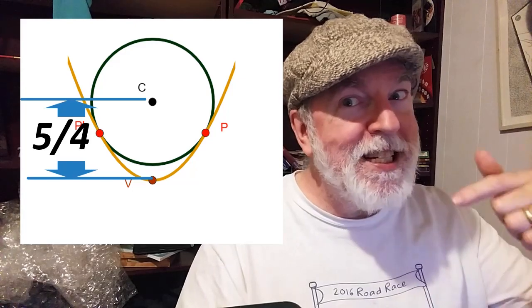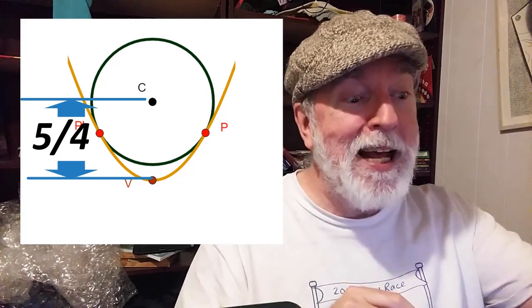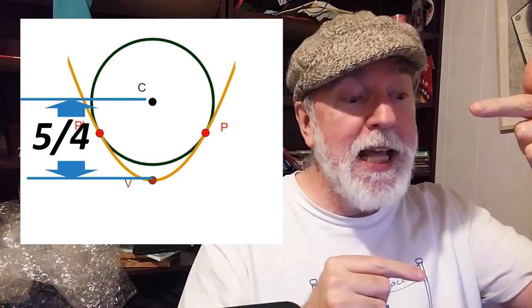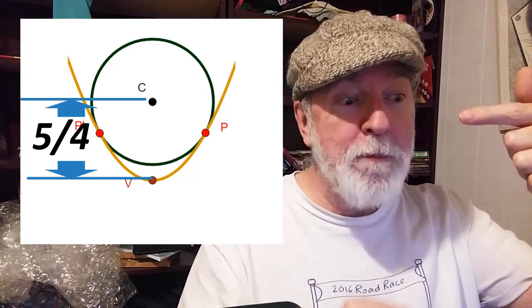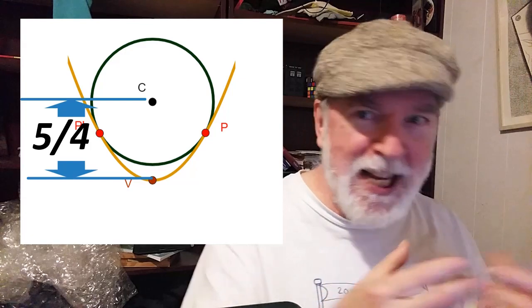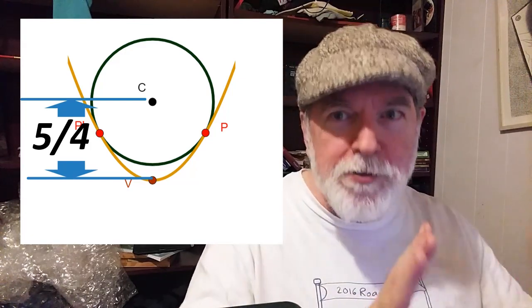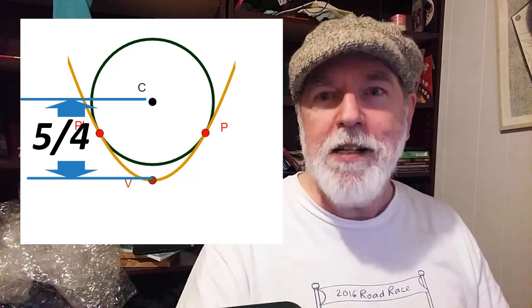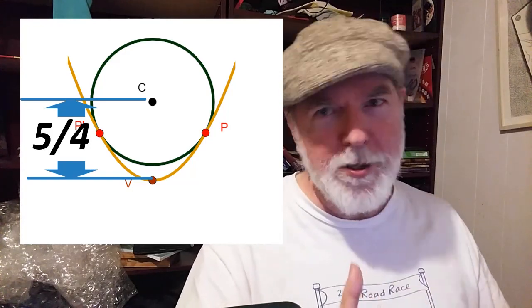Our question was basically how far is C from V. But we've shown that the distance between C, the center of that circle, and V, the vertex of that parabola, is five quarters. And that's the same units Dr. Pan was using in his more analytic construction.